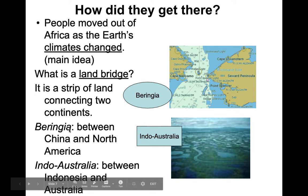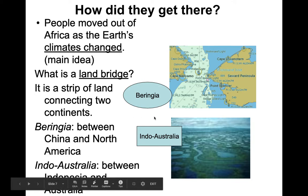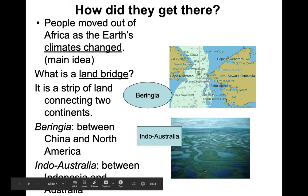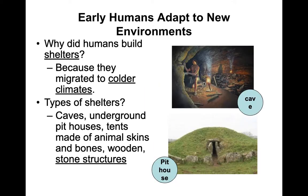We had Beringia from northern Russia and China to modern-day North America, and for the Indo-Australia route those seas were dried up. That's the main way we traveled. There were also some rudimentary boats that allowed travel, especially for the Indo-Australia route — not as much on Beringia since it was a solid mass of ice and land and it would have been tough to navigate in the cold water.